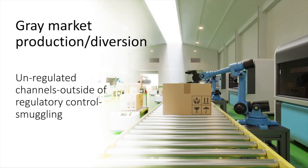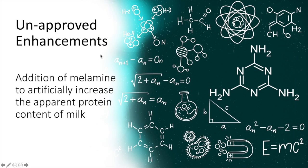Gray market production and diversion refers to unregulated channels outside of regulatory control, including smuggling. Unapproved enhancement involves the fraudulent addition of a substance specifically for its function — not as a replacement for product volume or weight. Examples include the addition of melamine to artificially increase the apparent protein content of milk, and the addition of unauthorized coloring agents such as Sudan dye to spices.